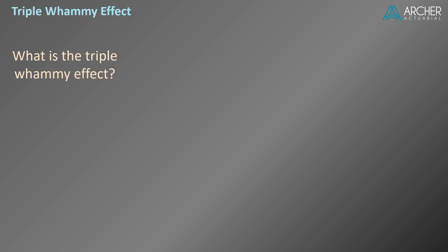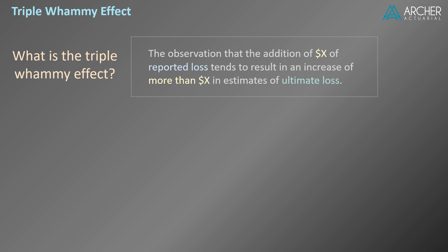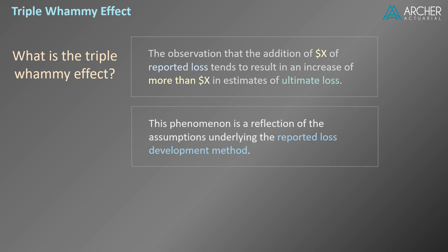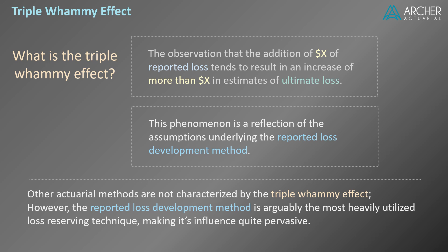So what is the triple whammy effect? I define the triple whammy effect as the observation that the addition of x dollars of reported loss tends to result in an increase of more than x dollars in estimates of ultimate loss. This phenomenon is really just a reflection of the assumptions underlying the reported loss development method. Other actuarial methods are not characterized by the triple whammy effect. However, the reported loss development method is arguably the most heavily utilized loss-reserving technique, making its influence quite pervasive.